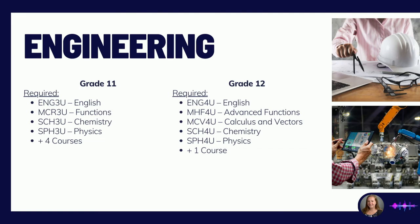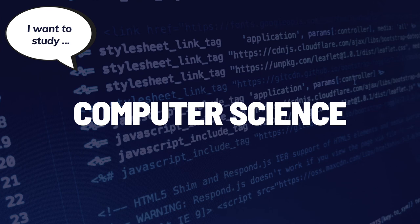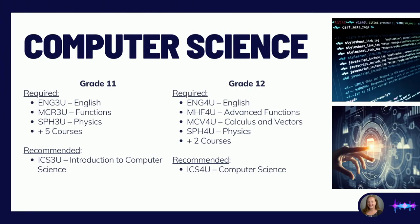This leaves room for one elective, which they can choose to their liking. Students interested in pursuing computer science in university must ensure in grade 11 they're taking English, Functions 11, and Physics, and we also recommend taking the grade 11 computer science course. In grade 12, to qualify for admission to computer science programs, students must take English, Advanced Functions, Calculus, and Physics, along with two other elective credits.